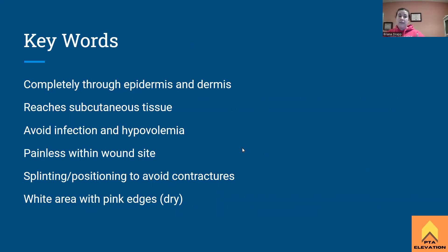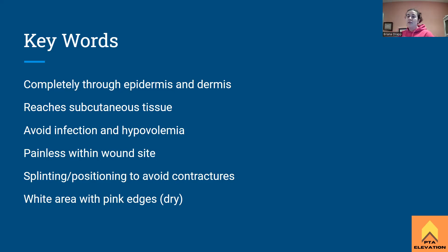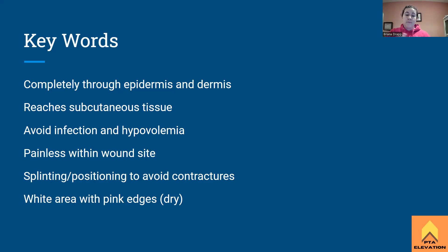Key words to remember: a full thickness burn goes completely through the epidermis and dermis and reaches the subcutaneous tissue. We want to avoid infection and hypovolemia — infection being the big one. The burn will be painless within the wound site. Use splinting and positioning to avoid contractures. The wound will appear white inside with a pink erythematous border outside.